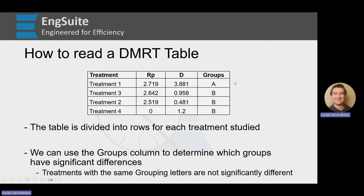For example, treatment 1 does not share group A with anything, so treatment 1 is significantly different from all other treatments. But treatment 3 shares group B with 2 and 4. Therefore, 3 is not significantly different from 2 or 4. And because 2 and 4 are both in group B, 2 and 4 are not significantly different from each other as well.